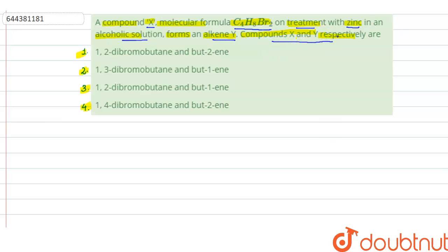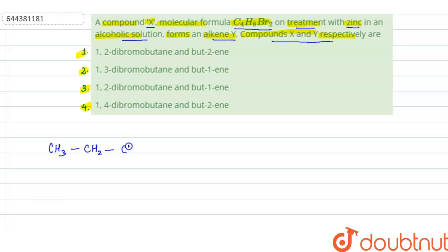We have to find out compounds X and Y. First of all, we'll find out the possible compounds with the formula C₄H₈Br₂. So let us draw them one by one. One possible compound is: CH₃-CH₂-CH(CH₂Br)-CH₂Br — this is 1,2-dibromobutane.